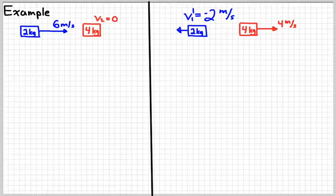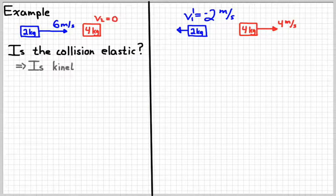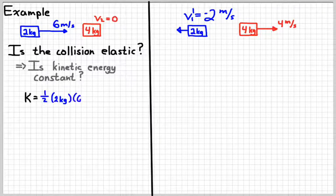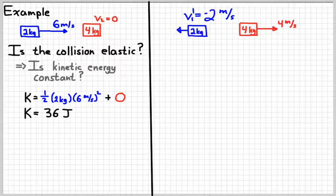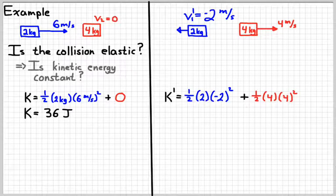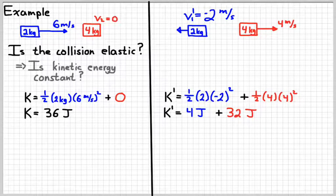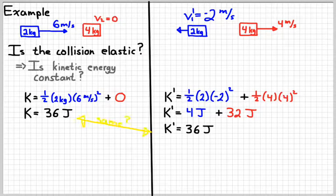So now our picture looks something like this. The next thing we want to know is: is the collision elastic? In other words, is the energy the same before and after the collision? We calculate the kinetic energy before using one-half mv squared for both objects. The second object has no energy since it's at rest, giving us 36 joules. Recalculating after the collision with the new velocities: the first object has four joules and the second has 32 joules, for a total of 36 joules. Since those are the same, the collision is elastic.